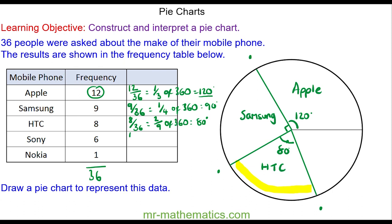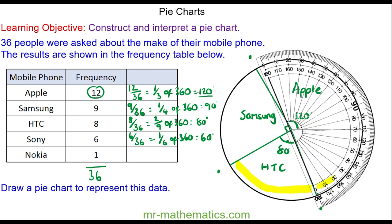And for Sony, we have six out of 36, which simplifies to make one sixth of the entire circle, which is 60 degrees. Go across to 60, put a point, and then draw a line from the center to the point at 60 degrees.